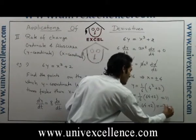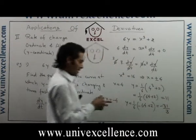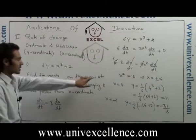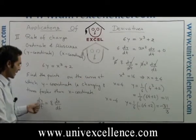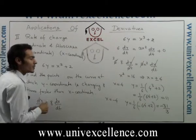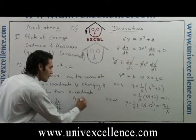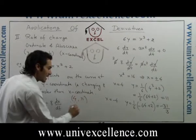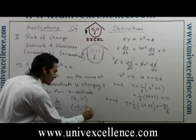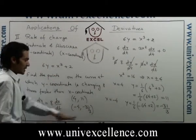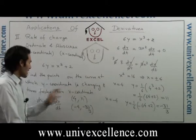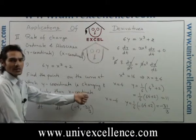So the points on the curve at which dy/dt is 8 times dx/dt are: first point (4, 11) and second point (−4, −31/3). At these two points, the y-coordinate is changing 8 times faster than the x-coordinate.